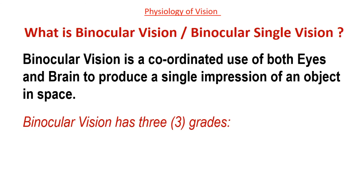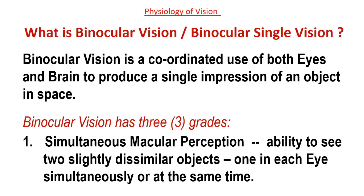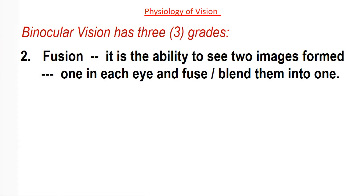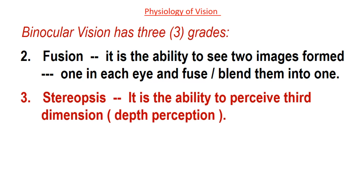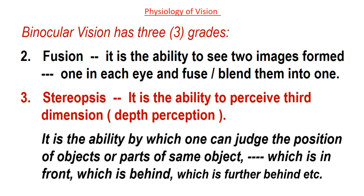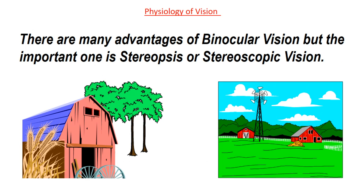Binocular vision has three grades. Number one, simultaneous macular perception — the ability to see two slightly dissimilar objects, one in each eye, simultaneously or at the same time. Number two, fusion — the ability to see two images formed, one in each eye, and fuse or blend them into one. And stereopsis — the ability to perceive the third dimension or depth perception. It is the ability by which one can judge the position of objects or parts of objects, such as which one is in front, which is behind, which is further behind, etc. The important advantage of binocular vision is stereopsis or stereoscopic vision, as you can see in the picture.